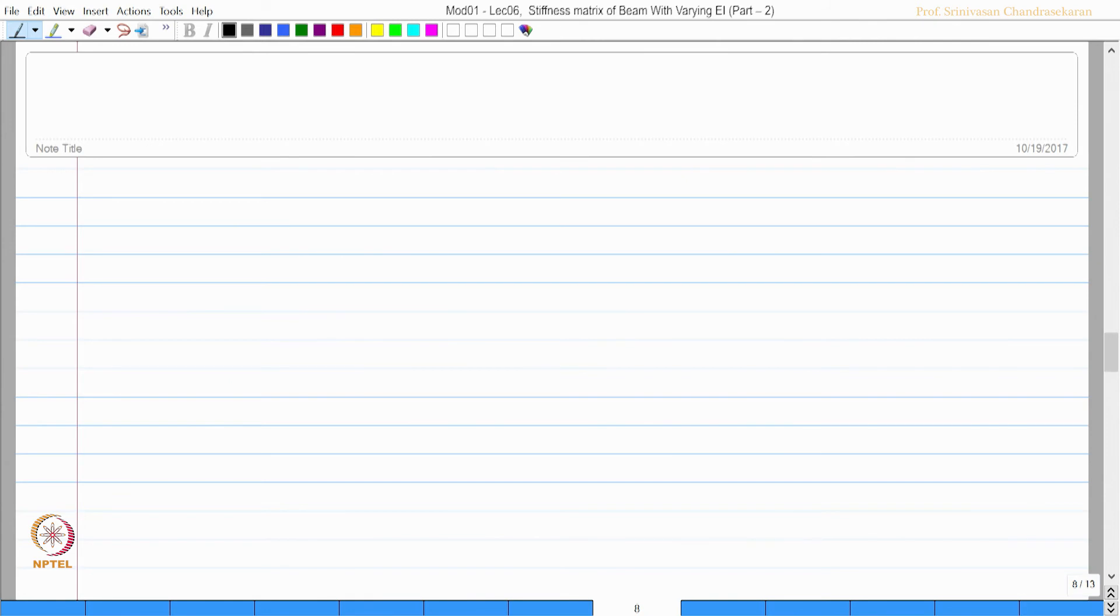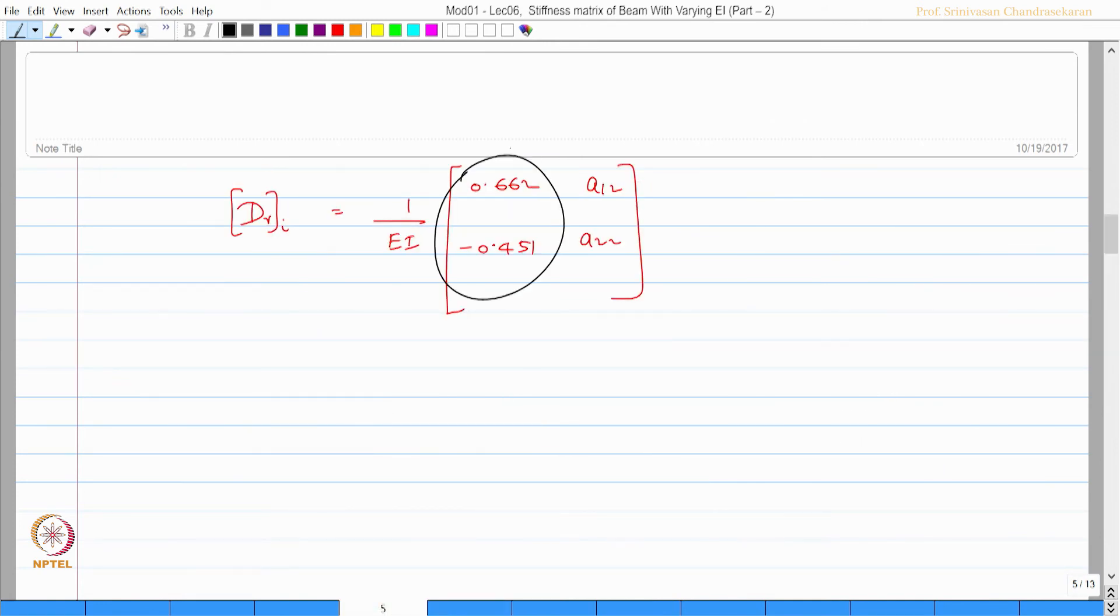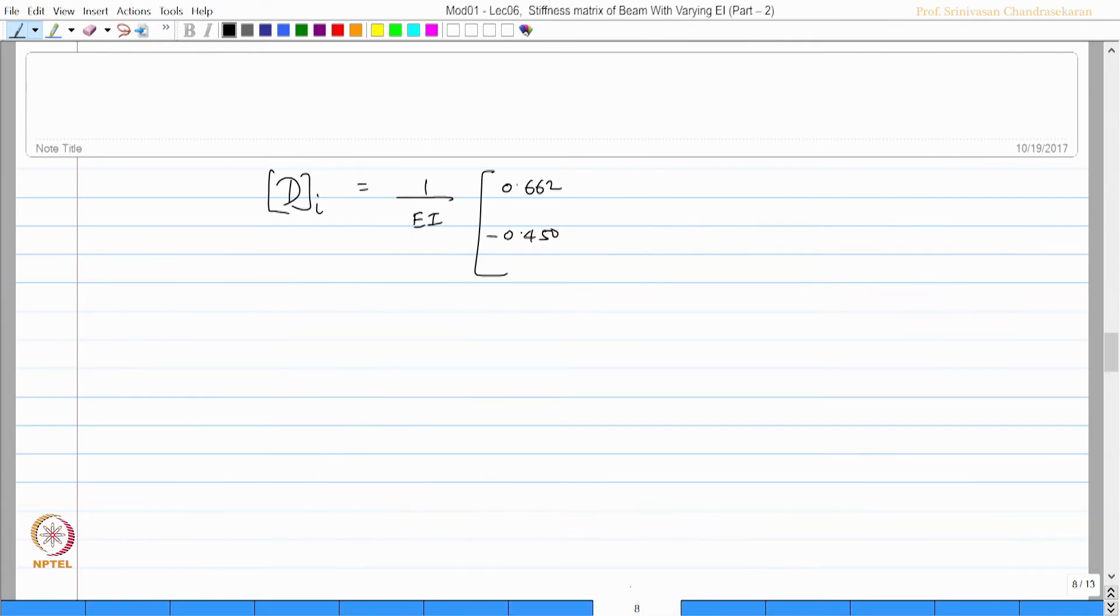Therefore, my flexibility matrix for the i-th beam will be 1 by EI. We already have these data with us, these two with us. We borrow that again: 0.662, minus 0.45. Now we have the new value: 0.45 and this is 1.21. So minus 0.45 and 1.210.